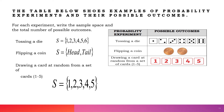The table below shows examples of probability experiments and their possible outcomes. When tossing a die, you have six possible outcomes — that is the sample space. When flipping a coin, you have only heads and tails. And if you draw a card randomly from a set of one to five, your sample space is one, two, three, four, five.